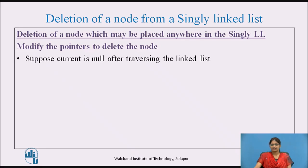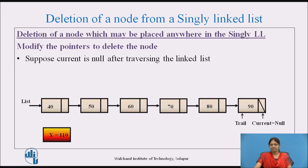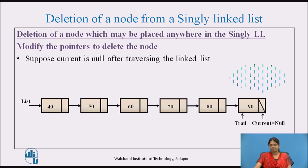In another situation, suppose current is null after traversing the linked list. Consider the linked list again — we want to delete a node with value 110. We assign trail as null and current to the first node and traverse the list. After traversal, trail reaches the last node and current points to null, indicating that the node with value 110 does not exist. This means the node to be deleted is not found.